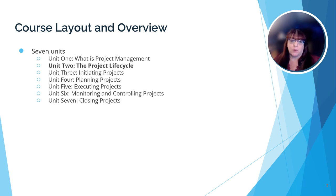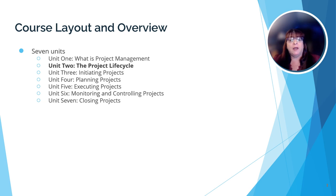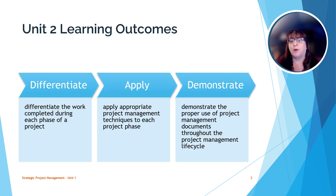There are seven units in this course. In Unit 1, we learned what a project is, who makes the decision to take a project on, and what the triple constraint theory is. In Unit 2, we're going to look at the project life cycle so we can see project management as a whole. Now that we know what the focus of the course will be, let's look at what you should understand when you complete Unit 2.